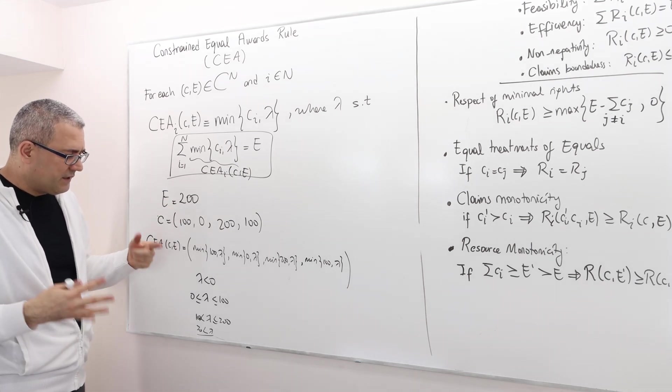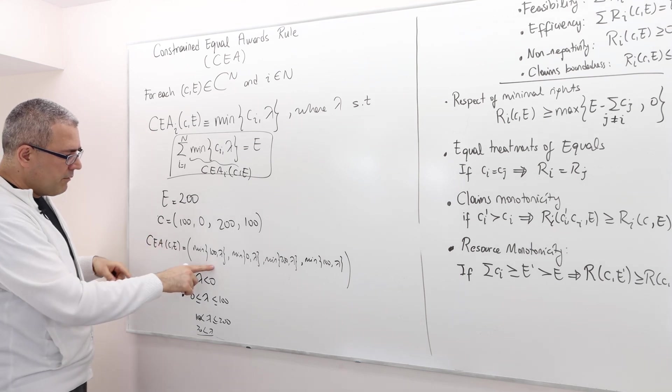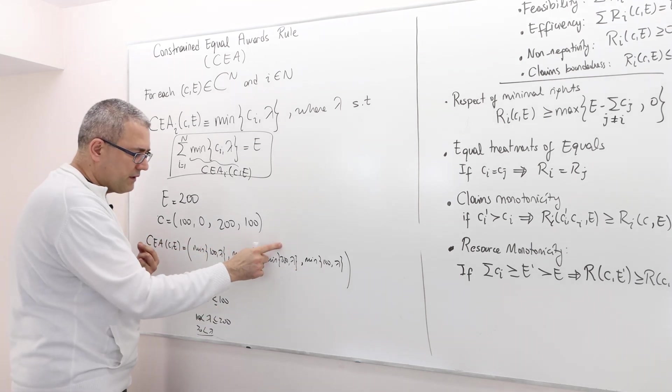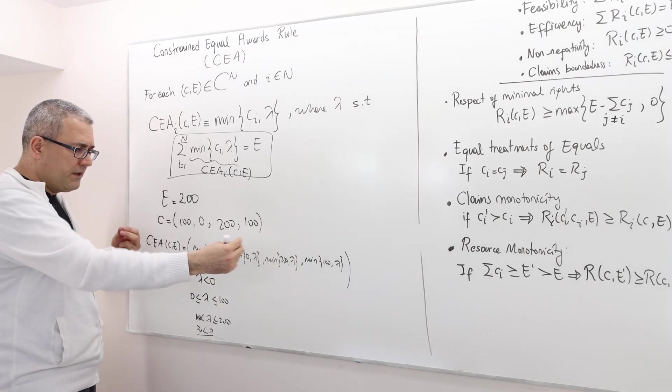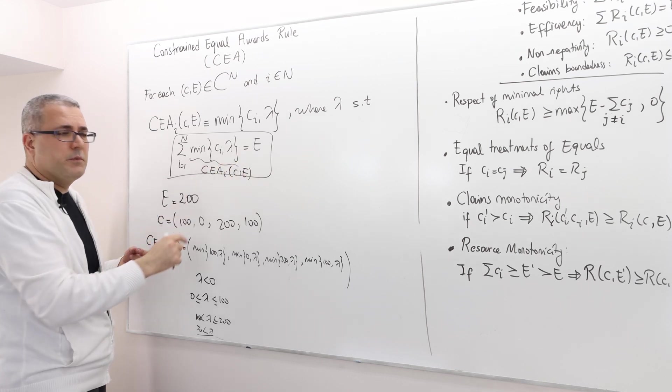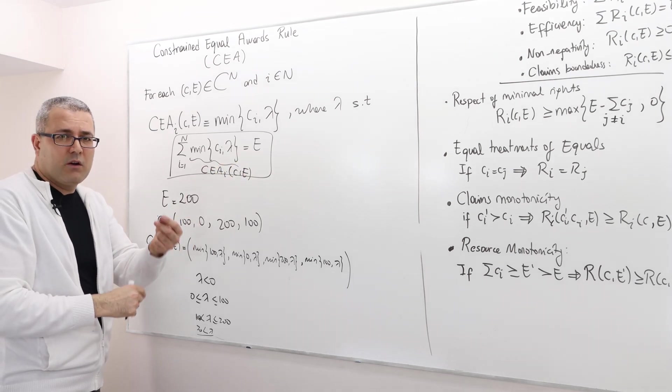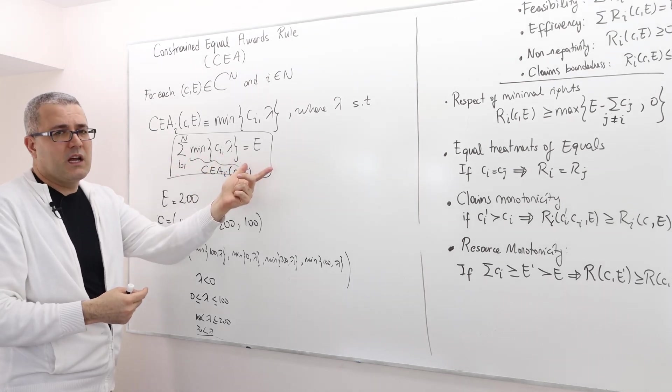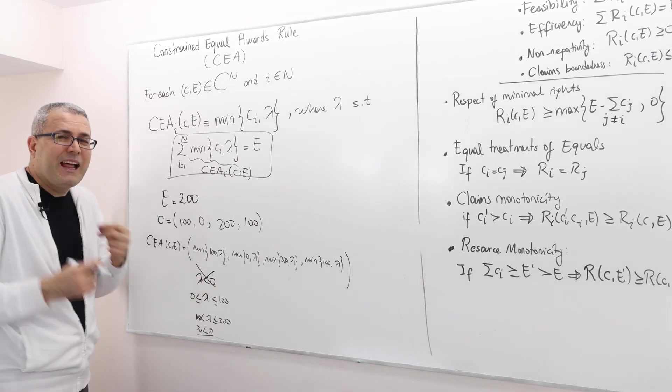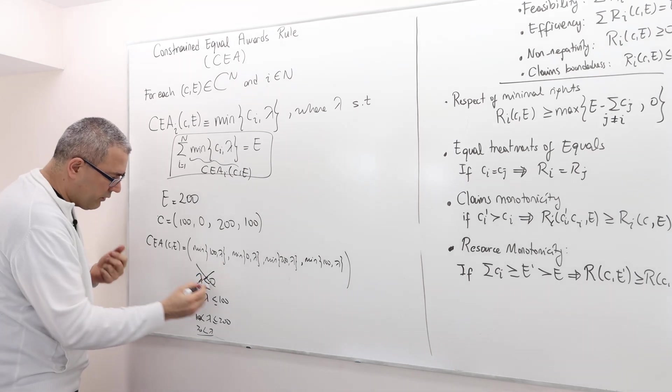If lambda is less than 0, what do I get? The minimum of everything is basically 0, so 0 plus 0 plus 0 plus 0. The reward vector is going to be 0. But then it doesn't satisfy this, because when I sum all the 0s, I'm going to get 0, which is not equal to E. Therefore, lambda shouldn't be less than or equal to 0.